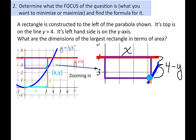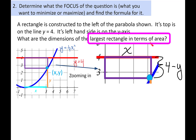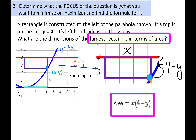Step 2: what's our focus? That's what you want to minimize or maximize. The focus is the largest rectangle in terms of area — we want to maximize the area. So we need a formula for the area. Given our picture, it's quite easy: area is just length times width, so x times (4 minus y). That is our focus.